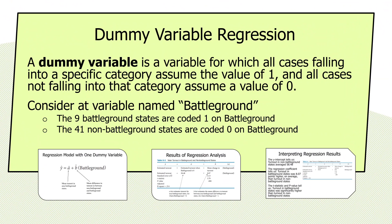For example, think about the state data set. Suppose you're trying to explain turnout differences across states, and we think whether a state was considered a battleground state is going to have a lot to do with that — battleground states might have higher turnouts than non-battleground states. We could define a dummy variable such that the nine battleground states in 2012 would have a value of one, identifying them as battleground, and the 41 other non-battleground states would have a value of zero.